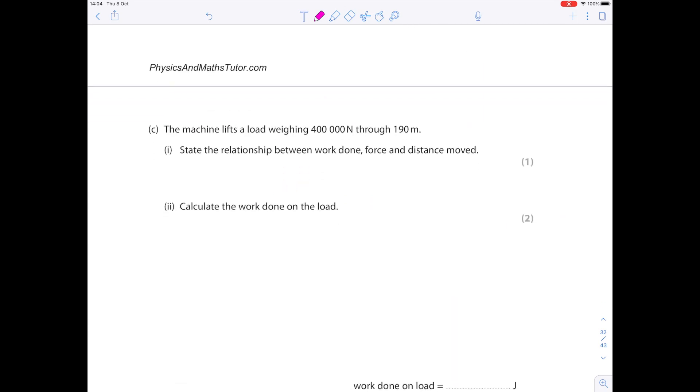The machine lifts the load weighing 400,000 newtons through 190 meters. State the relationship between work done, force and distance moved. Work done is force times distance. Don't worry if you do what I do which is sometimes write it out in full, sometimes write it out in the accepted symbols. Just notice that that's your force here and that's your distance.